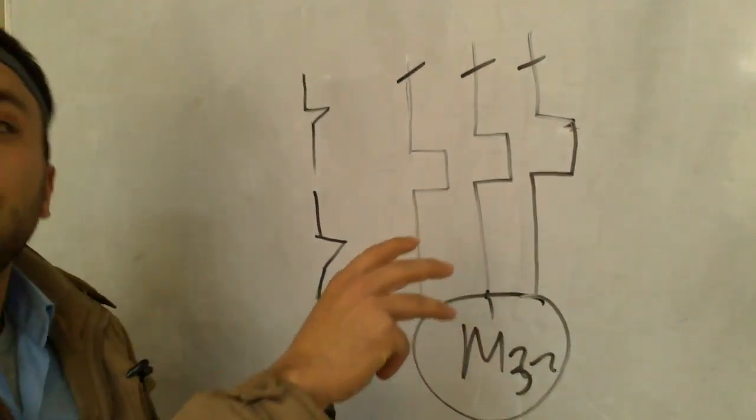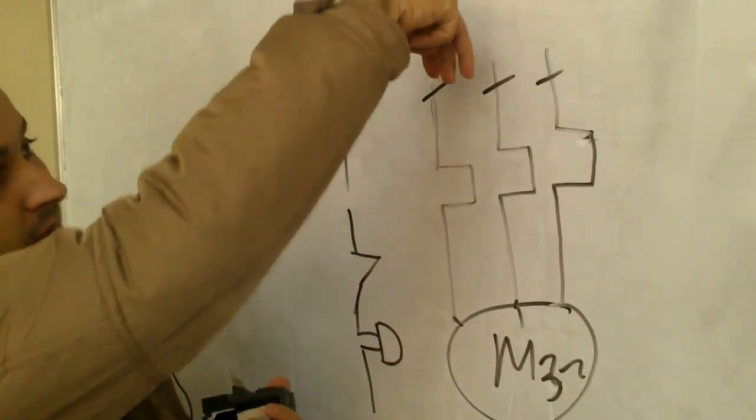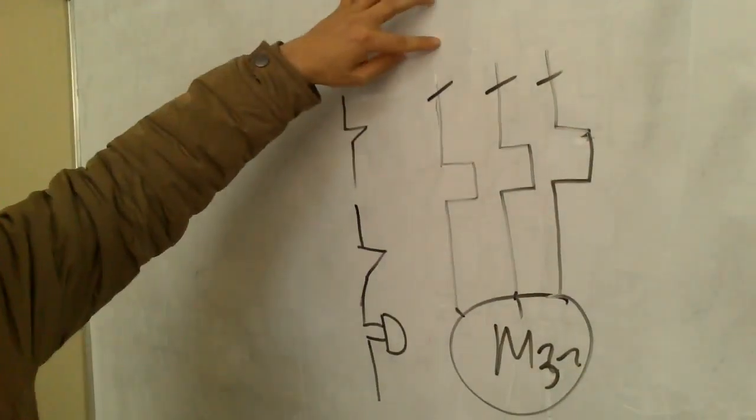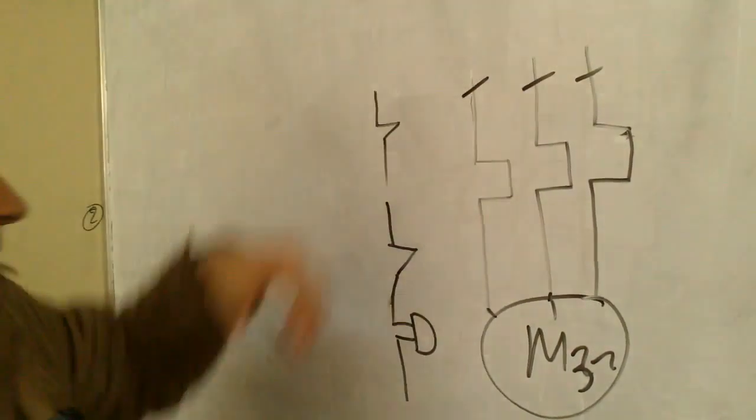we have three terminals. Three terminals are for entering three phases. Electric phases enter this.